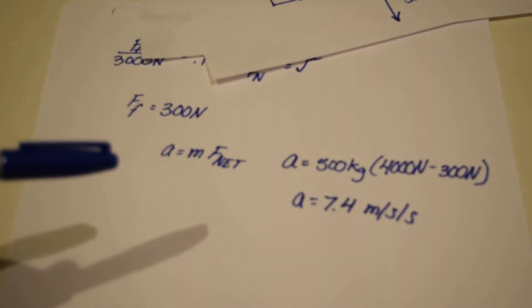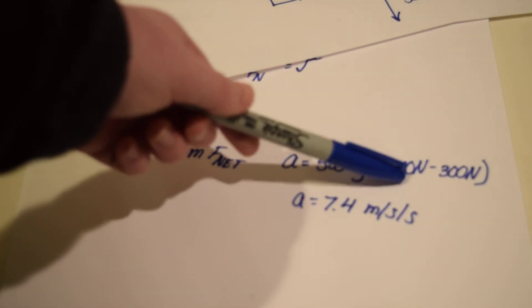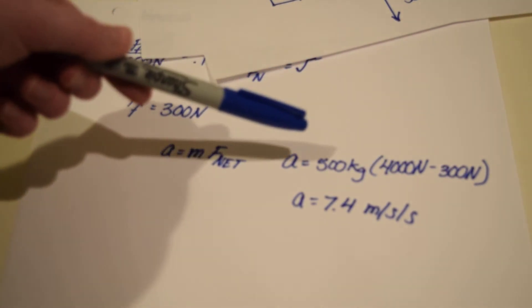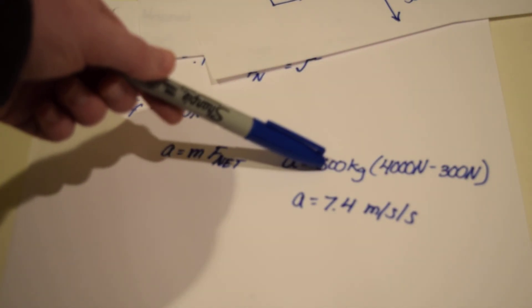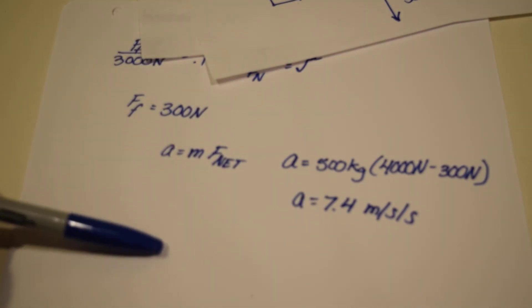That is 3,700 newtons in total and then when we divide that by the 500 kilograms we get 7.4 meters per second per second.